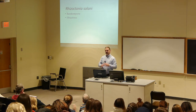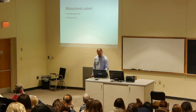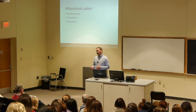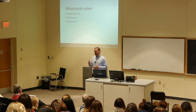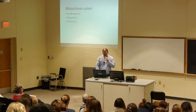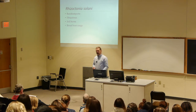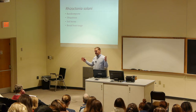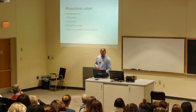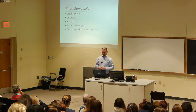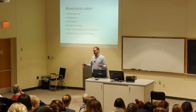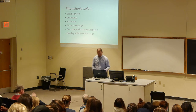Rhizoctonia solani is ubiquitous — you'll find it in just about any soil you check. It is soil-borne, although there are particular strains that can affect aerial parts. It has a very broad host range: as a species, Rhizoctonia solani infects over 200 economically important plants, so it's huge. It does not produce any asexual spores and rarely produces a sexual stage, so it reproduces primarily vegetatively — just growing through the soil, producing storage structures, and growing again.